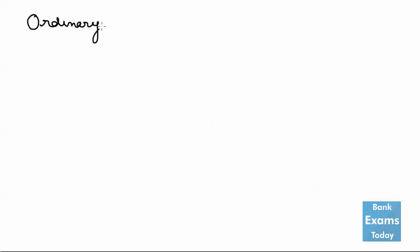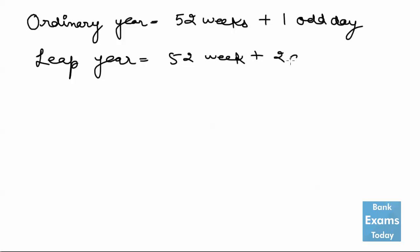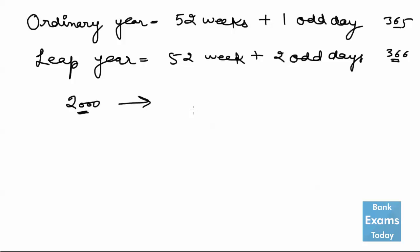In an ordinary year there are 52 weeks plus 1 odd day. In a leap year there are 52 weeks plus 2 odd days — so 365 days and 366 days respectively. For the 1st century reference, the year 2000 had 0 odd days.